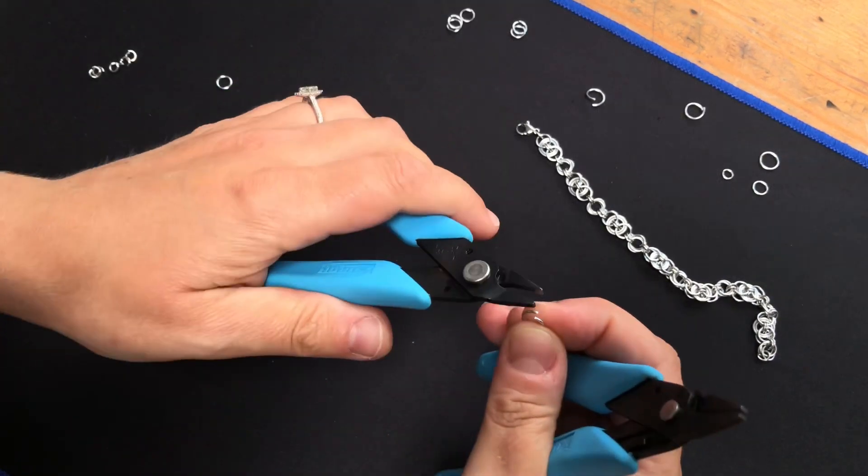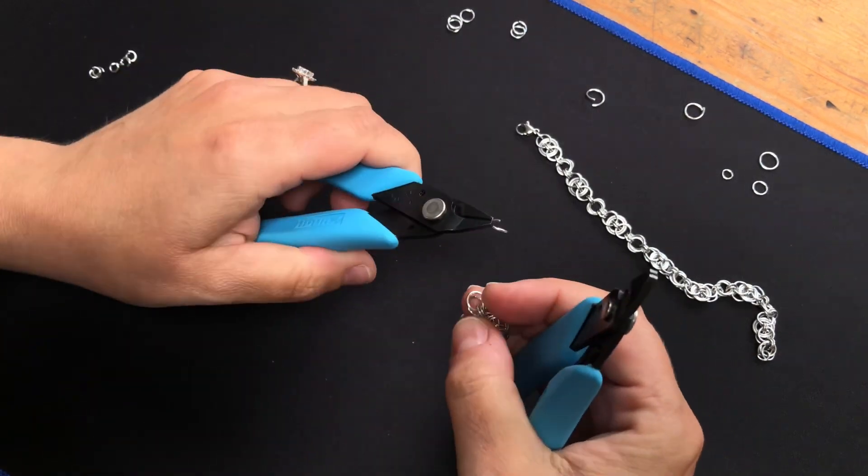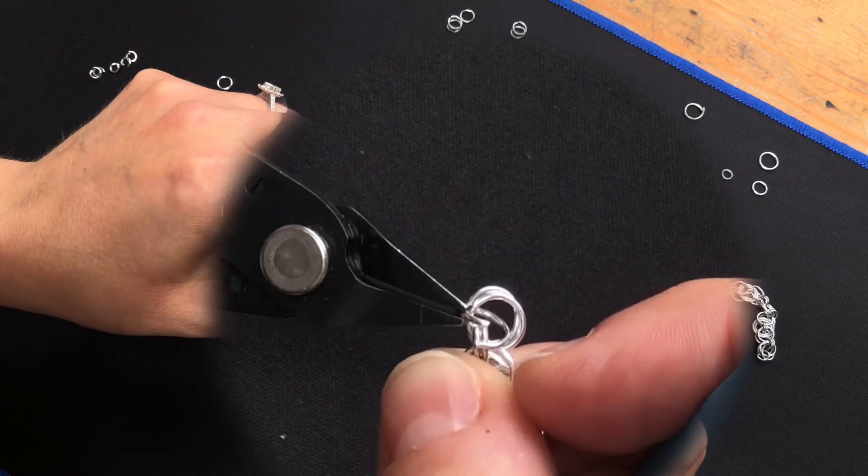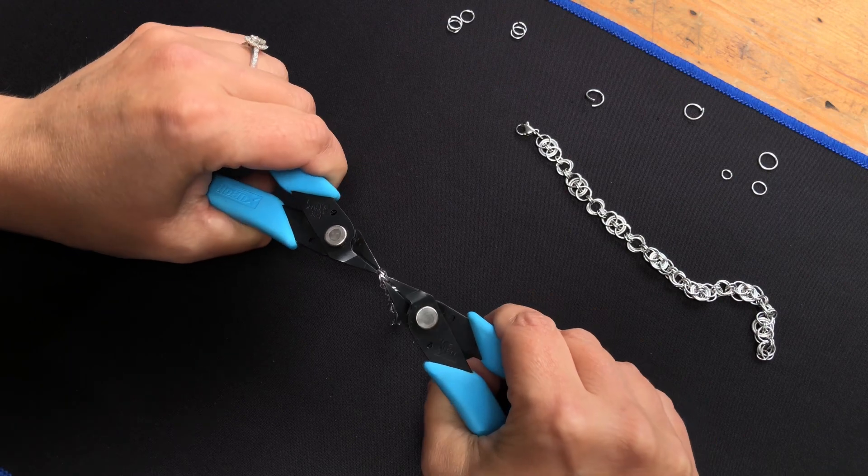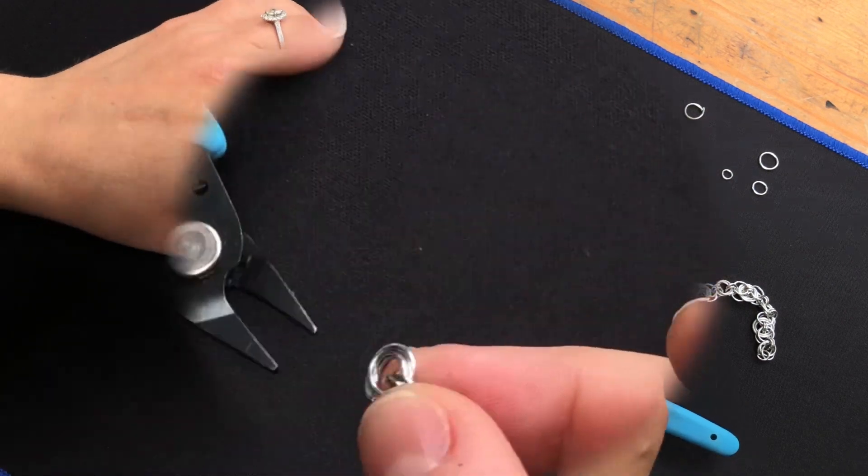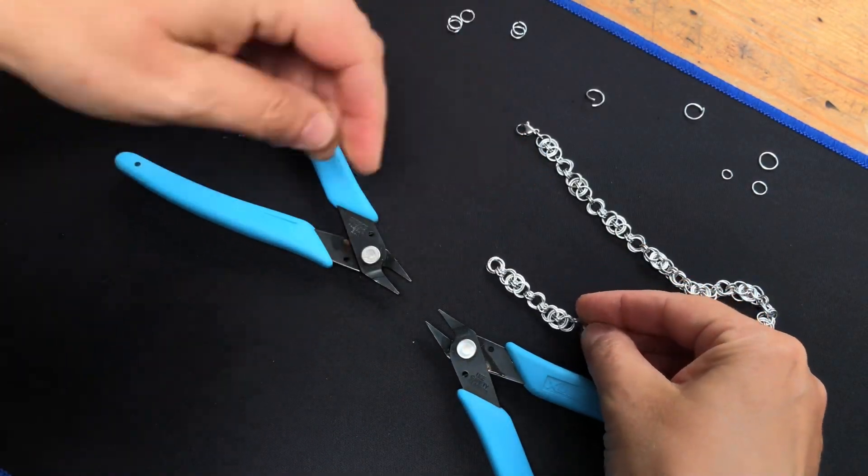And then we want to take a third one, pick up those two again, put it through the two small ones, and close it up. And there's your mobius again. And then all you just need to do is keep repeating